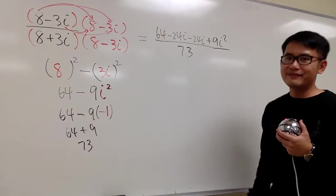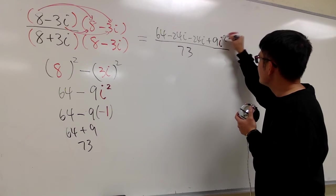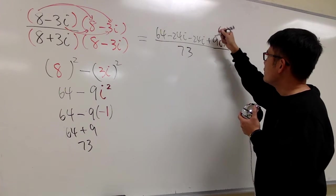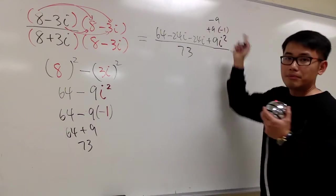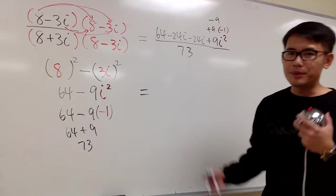So this is what we have. Well, once again, we see the i squared right here. So we have to replace this with negative 1. So in fact, this is plus 9 times negative 1, so all in all, this is just going to be minus 9. All right, combine like terms, and we'll be done.